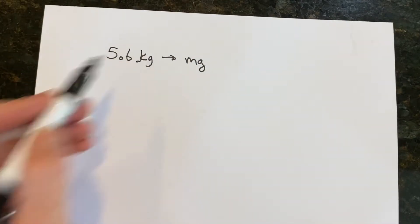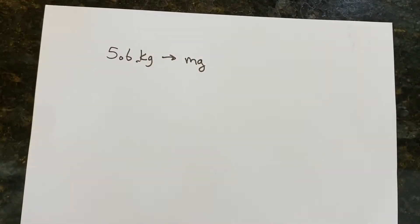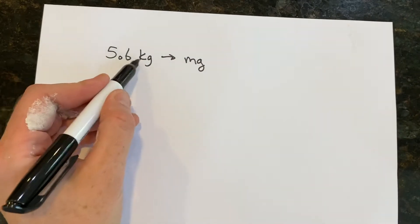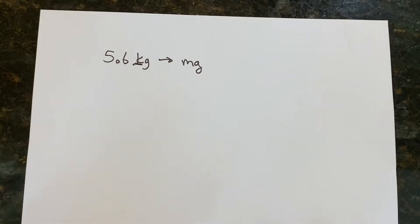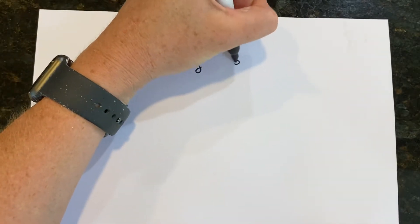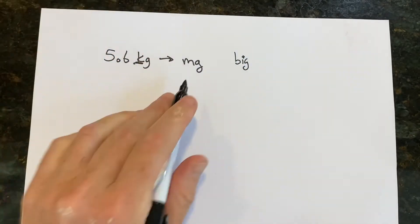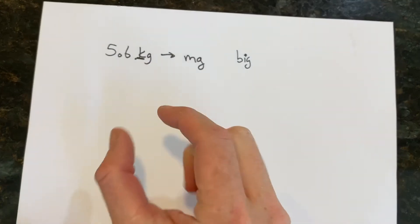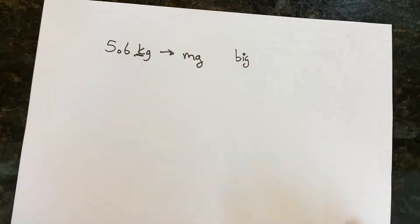First of all, we should recognize that kilograms is much bigger - sorry I got paint on my hands because I'm painting - so we should recognize that kilograms is much bigger than milligrams. So we expect our answer to be pretty big. We expect there to be a lot of milligrams, a lot of little tiny things and there's 5.6 big things.